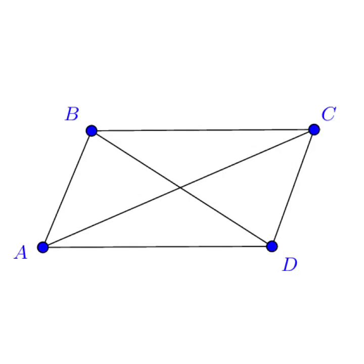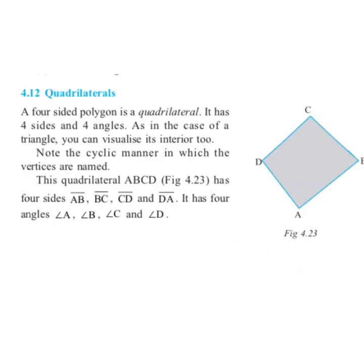The measure of all the angles of a quadrilateral is always 360 degrees. Now take out page number 81 and see figure number 4.23. You can see a quadrilateral ABCD. A 4-sided polygon is called a quadrilateral. It has 4 sides — AB, BC, CD, and DA — and 4 angles: angle A, angle B, angle C, and angle D.